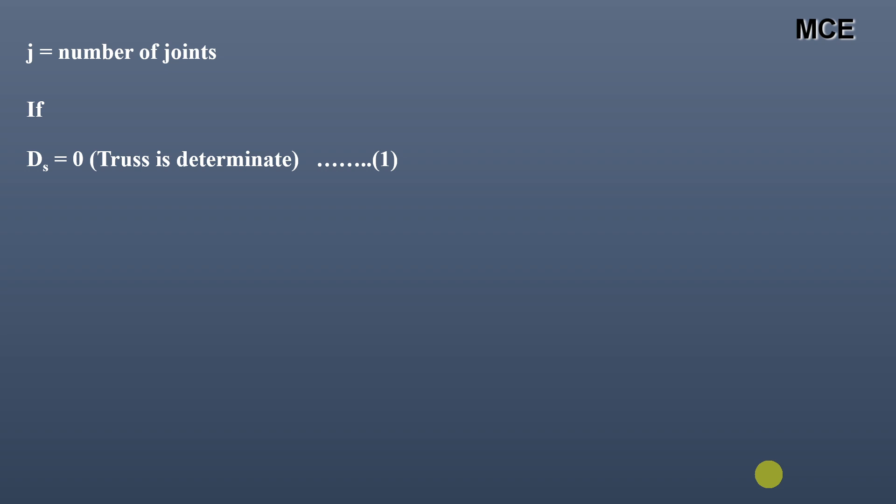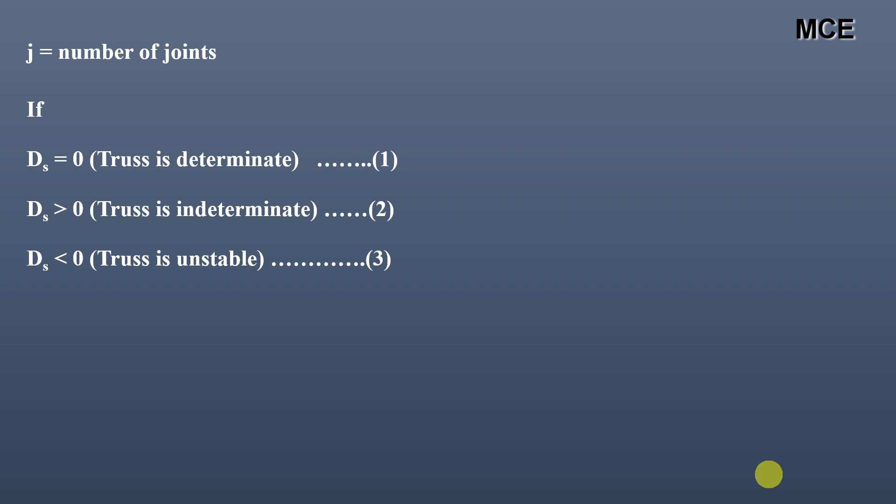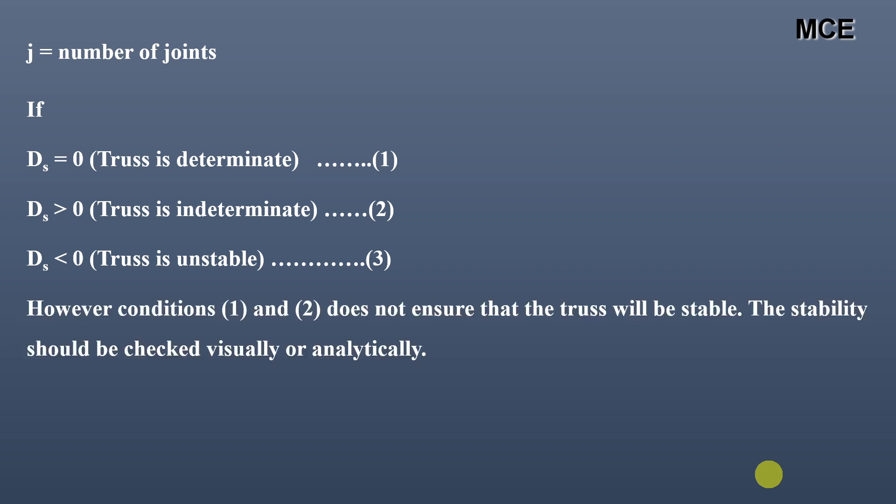If the value of ds is equal to zero, the truss is determinate. If ds is greater than zero, the truss is indeterminate. If ds is less than zero, the truss is unstable. However, conditions one and two don't always ensure the truss will be stable — you must check stability visually or analytically.